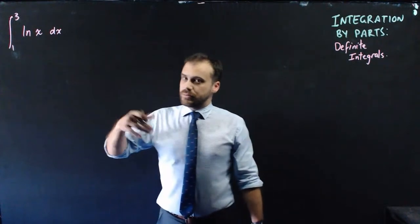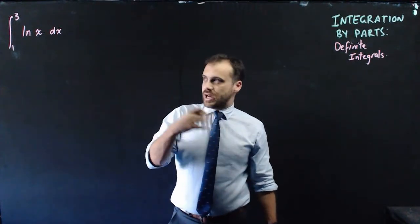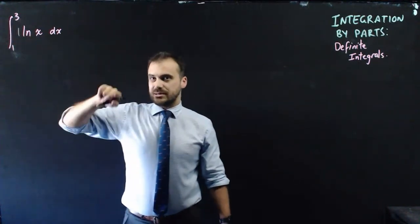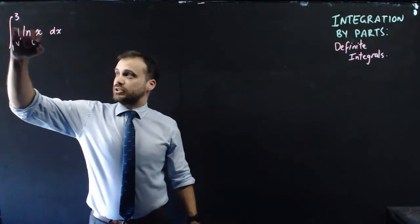I need to determine which one my u and which one my v dash is. I should use the number 1 out the front here as my v dash. So that's going to be v dash and that's going to be u.